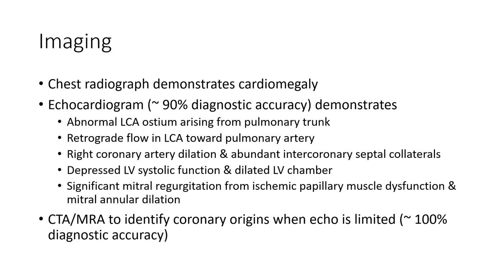Chest radiographs demonstrate cardiomegaly. Echocardiogram demonstrates the anomalous coronary artery ostium arising from the pulmonary trunk, retrograde flow in the left coronary artery to the pulmonary artery, right coronary artery enlargement, and abundant internal coronary septal collaterals.